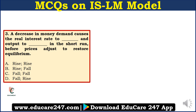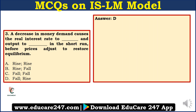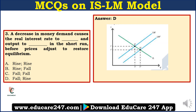Moving on to question number 3: A decrease in money demand causes the real interest rate to dash and the output to dash in the short run before prices adjust to restore equilibrium. Option A: rise, rise. Option B: rise, fall. Option C: fall, fall. Option D: fall, rise. The answer is D — fall and rise. A decrease in money demand causes the real interest rate to fall, because interest rate is the price of money. Whenever there is a decrease in demand for any good, the price of that good decreases. The same holds for money: whenever demand for money decreases, the price of money — which is the interest rate — falls.